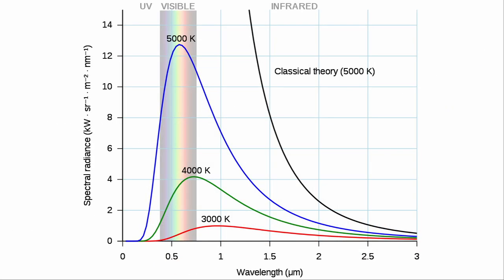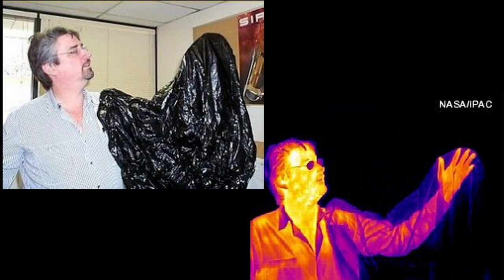One such example was called the ultraviolet catastrophe. Any object that has temperature emits radiation. You right now are emitting infrared radiation which is what infrared cameras look for.